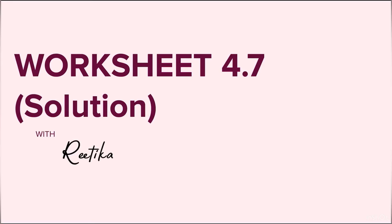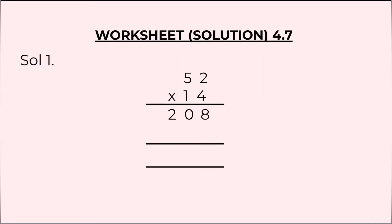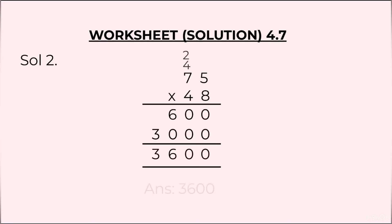Solutions to Worksheet 4.7. Question 1 was 52 × 14, and the answer to this is 728. Question 2 was 75 × 48, and the answer to this question is 3,600.